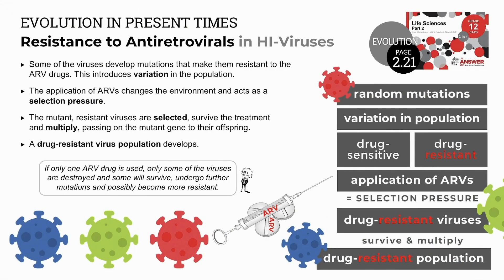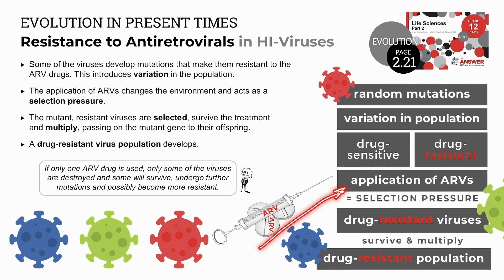Because viruses multiply very quickly, it increases the chances of a random mutation occurring. Some viruses may develop mutations that make them resistant to ARV drugs, introducing variation in the population — drug-sensitive viruses and drug-resistant viruses that carry the mutated gene. The application of ARVs changes the environment and acts as a selection pressure. Mutant, drug-resistant viruses are selected to survive; they survive exposure to the ARVs, multiply, and pass on the mutant resistant gene to their offspring, so a drug-resistant population may develop.